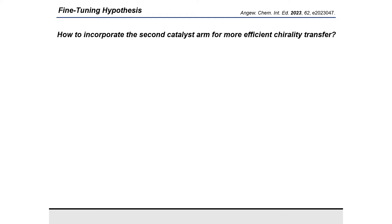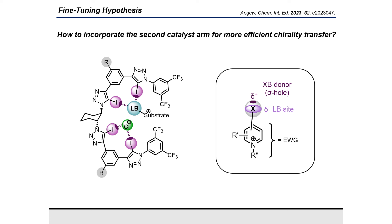Namely, to introduce a Lewis acid site to the core of the substrate in the form of a halogen atom. Because the formed quinolinium is acting as an electron-withdrawing group, the halogen can also build up a sigma hole and a Lewis acid site, with which it could possibly interact with the second arm of the catalyst.